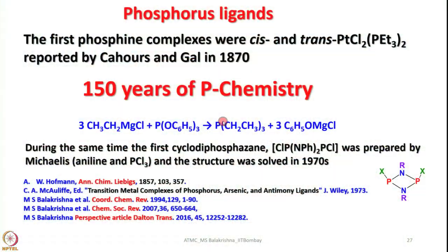With this, let me stop the discussion on oxygen donor ligands and move on to another very important class of ligands — phosphines. You may be surprised to know that phosphines were known almost 150 years ago. The first phosphine complex of platinum — bis(triethylphosphine)dichloroplatinum, both cis and trans — were reported in 1870. This phosphine was initially made by treating ethylmagnesium chloride with triphenylphosphite to form triethylphosphine through elimination.